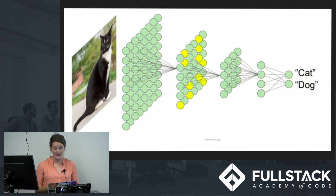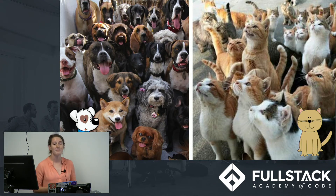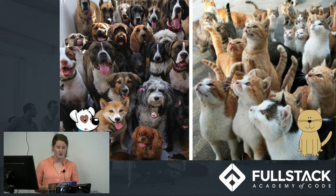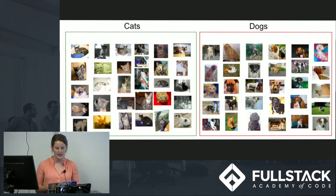We need to train the network. So if we show the network many thousands of examples of cats and many thousands of examples of dogs, it learns to extract the salient features and make a prediction. If it's wrong — which it will be at the beginning — it automatically adjusts the weights just a little bit to try to improve the error. When you do this over and over again through lots of iterations, which is called gradient descent, you end up with a model that can classify images it's never seen before.